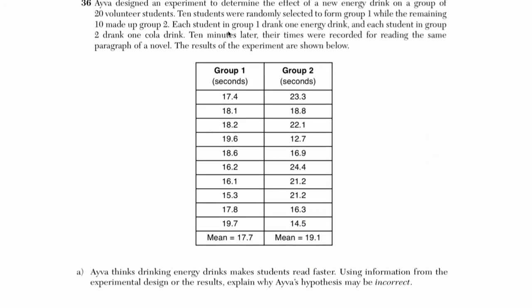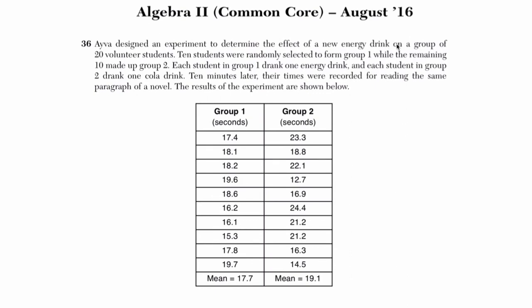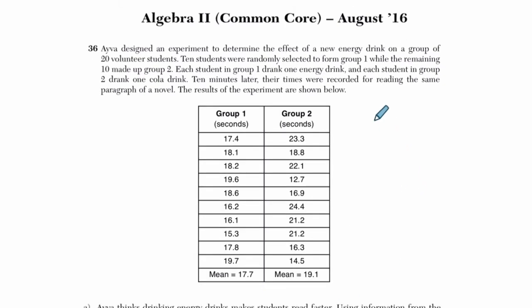Ava designed an experiment to determine the effect of a new energy drink on a group of 20 volunteer students. All right, so I'm just keeping track of what's going on. I'm going to underline some things that I see so I don't get confused. So there's a new energy drink, and you're looking at how it impacts 20 students. 10 students were randomly selected to form group 1, while the remaining 10 group 2. So there's two groups. Each had 10 students.